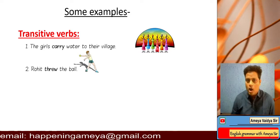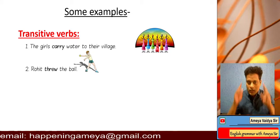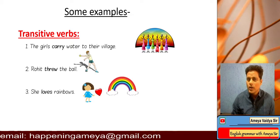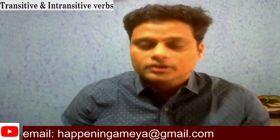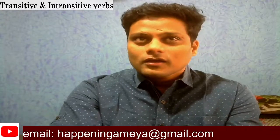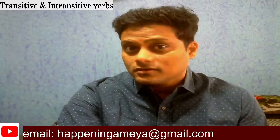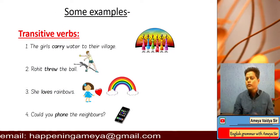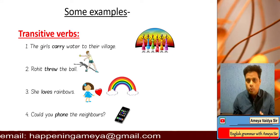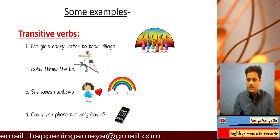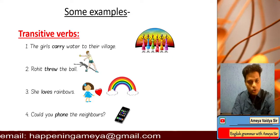Let's consider the third example: 'She loves rainbows.' She loves — loves what? Rainbows makes it clear. So 'loves' is transitive. Consider the next example: 'Could you phone the neighbors?' Could you phone who? The neighbors. Remember those three questions. These are examples of transitive verbs — sometimes you need an object, otherwise it doesn't make complete sense. You can pause the video if you want to make notes.